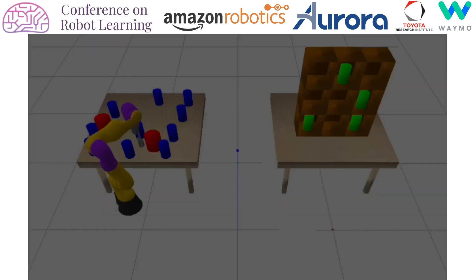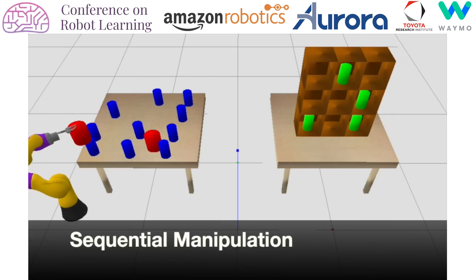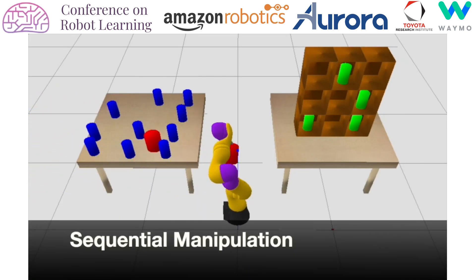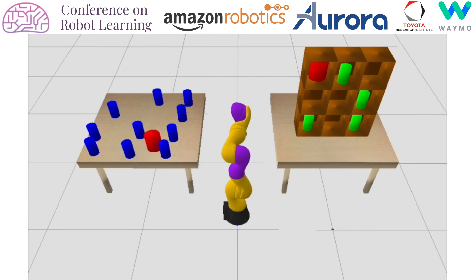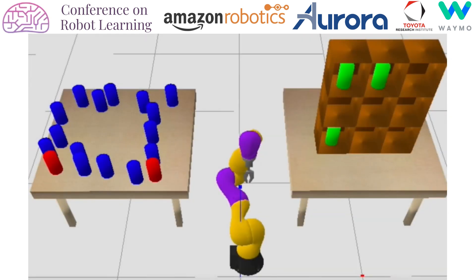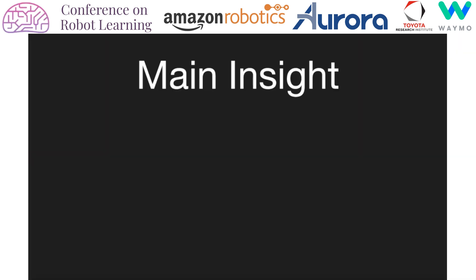Or consider this sequential manipulation domain, where the robot must move the red objects into the bins on the right. If the agent imposes a constraint that allows only top grasps and forbids placing objects in already occupied bins, it must only consider plans that obey this constraint. Our main insight is that we can automatically reap additional benefits by learning to impose constraints.